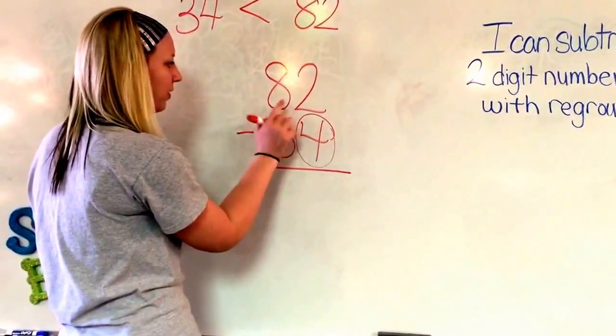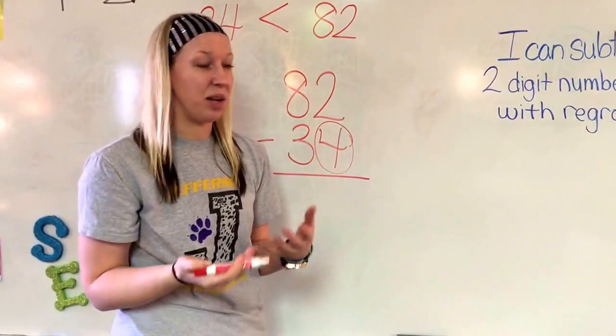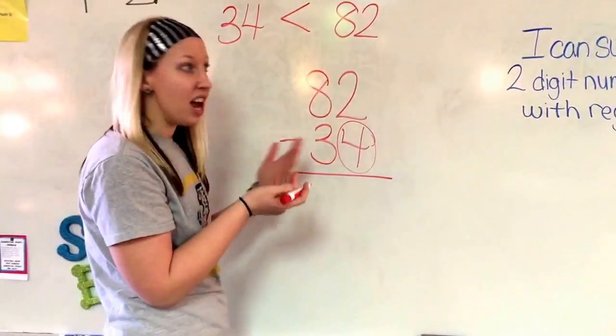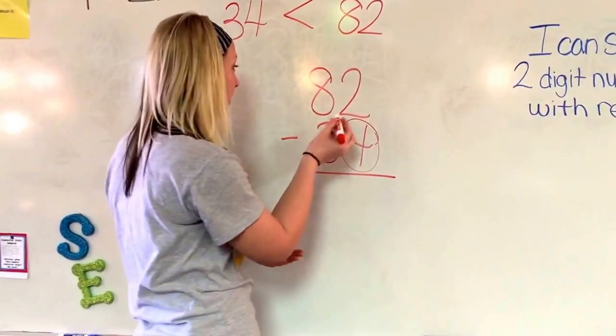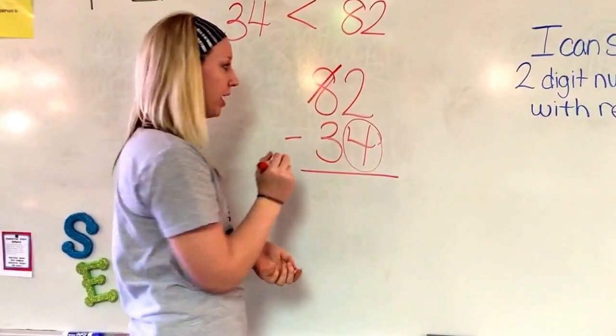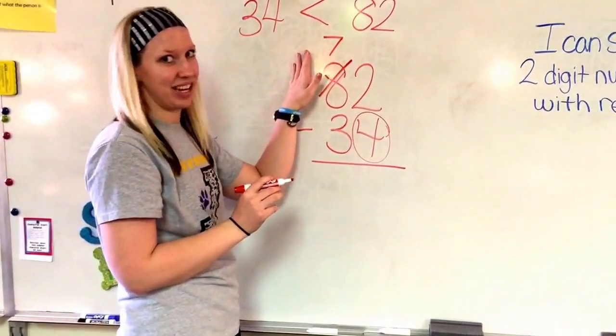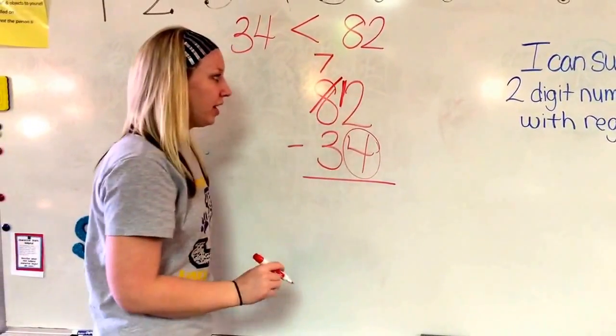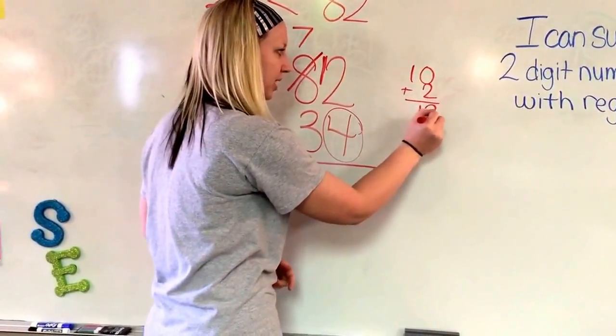When there's more right here, we have to go over to our next-door neighbor, our tens column. And we're going to have to borrow from them. It's like when you don't have enough sugar, you have to go over and ask somebody for a cup of sugar. So we don't have enough ones. So we're going to go, hey, tens, can I borrow some ones from you? So I'm going to go over and I'm going to say, hey, Mr. Eight, I need more. And he's going to give me one. So if he gives me one ten, now I only have seven tens because I took one away from him. And now I'm going to bring that ten back over.